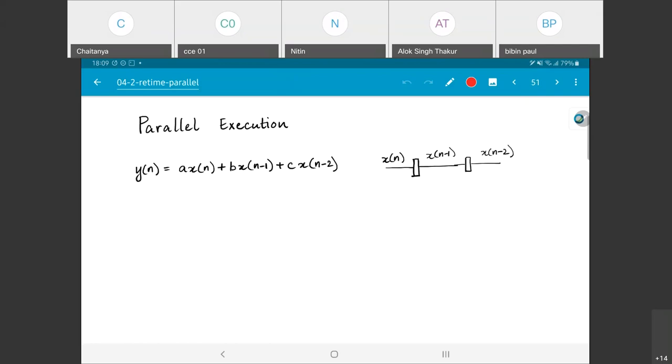What would the architecture for this look like? I would basically have a tap delay line, these 3 registers. Multiply them by the corresponding coefficients, add up, and I get y of n as the output. The critical path here is going to be Tm, one multiplier followed by 2 adders. We have done this analysis once earlier as well.